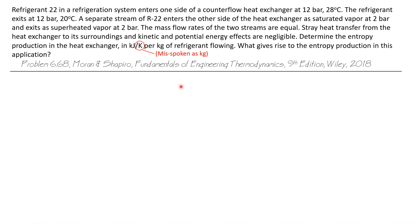Refrigerant 22 in a refrigeration system enters one side of a counterflow heat exchanger at 12 bar and 28 degrees C. The refrigerant exits at 12 bar, 20 degrees C. A separate stream of R22 enters the other side of the heat exchanger as saturated vapor at 2 bar and exits as superheated vapor at 2 bar. The mass flow rates of the two streams are equal. Stray heat transfer and kinetic and potential energy effects are all negligible. Determine the entropy production in the heat exchanger in kilojoules per kilogram of refrigerant flowing.